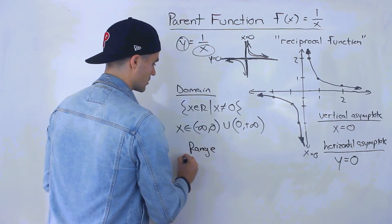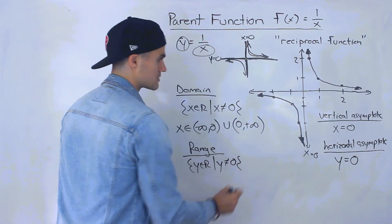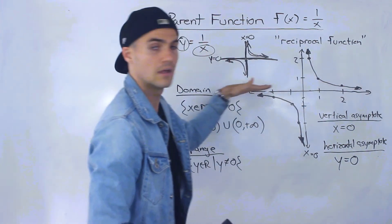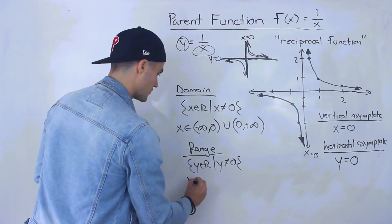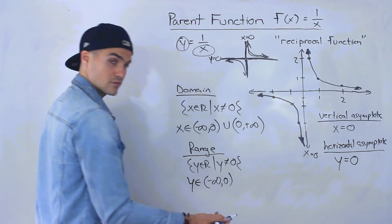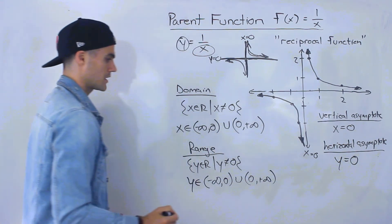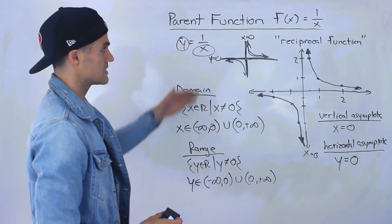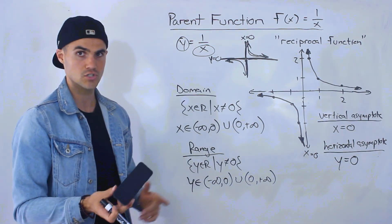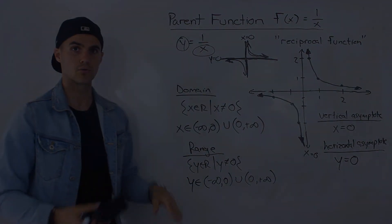The range is actually going to be the same thing — y can be anything but y cannot equal 0. From the most negative y value to the most positive, there's a break at y equals 0. In interval notation: y as an element from negative infinity to 0, not inclusive, or from 0 to positive infinity. That is the reciprocal function 1 over x, and that is the domain and range for it.